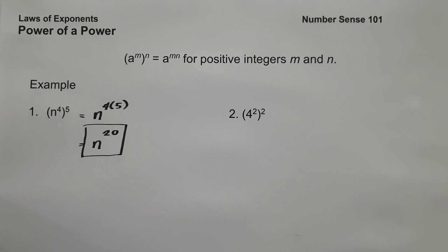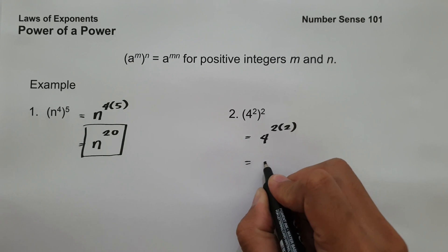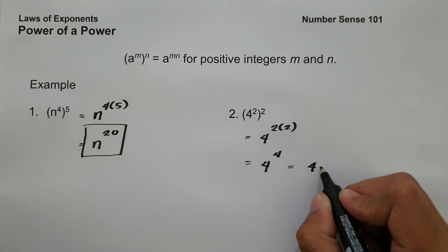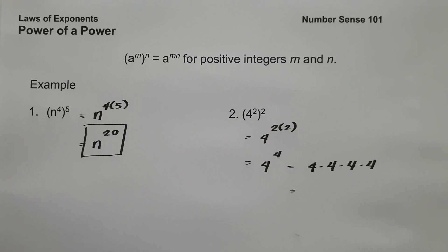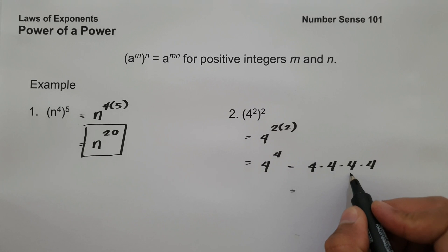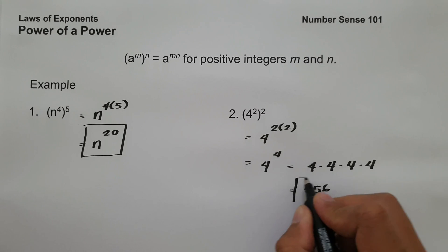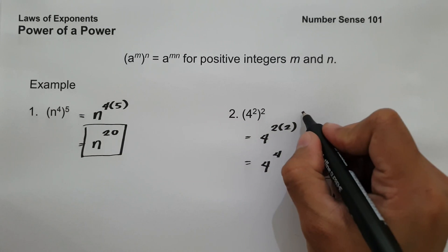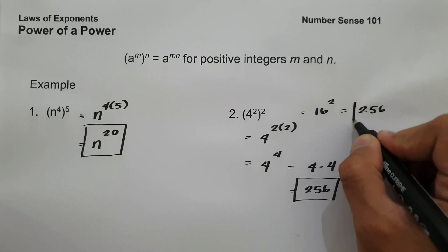On example number two, we have 4 squared raised to 2. To simplify, let us distribute the exponent. It will give us 4 raised to 2 times 2, that is 4 raised to 4. Expanding this, we get 4 times 4 times 4 times 4, multiplying 4 four times to itself: 4 times 4 is 16, times 4 is 64, times 4 is 256. Another way: simplify 4 squared first, which is 16, then 16 squared gives us 256. And this will be our answer.